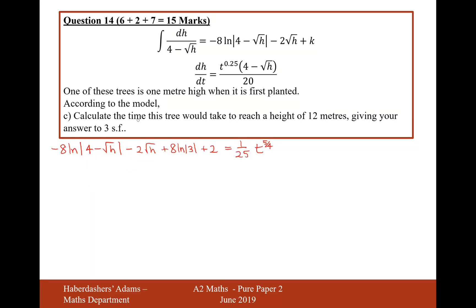So this is the formula here. So now we need to find the time when the height of the tree is 12 metres. So let's now plug in h equals 12 into this formula. So it's going to be minus 8 ln 4 minus root 12, minus 2 root 12, plus 8 ln 3, plus 2, equals 1 over 25t to the power of 5 over 4. Now what I might suggest is working this out on the left-hand side and then timesing by 25. And if we do all of that and we times by 25 as well, we get t to the power of 5 over 4 equals 221 approximately.